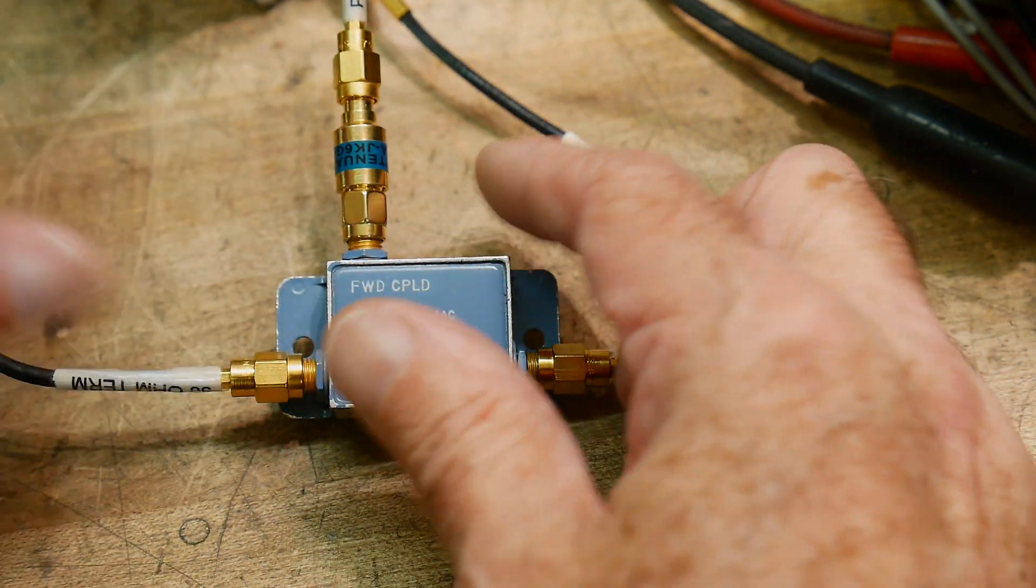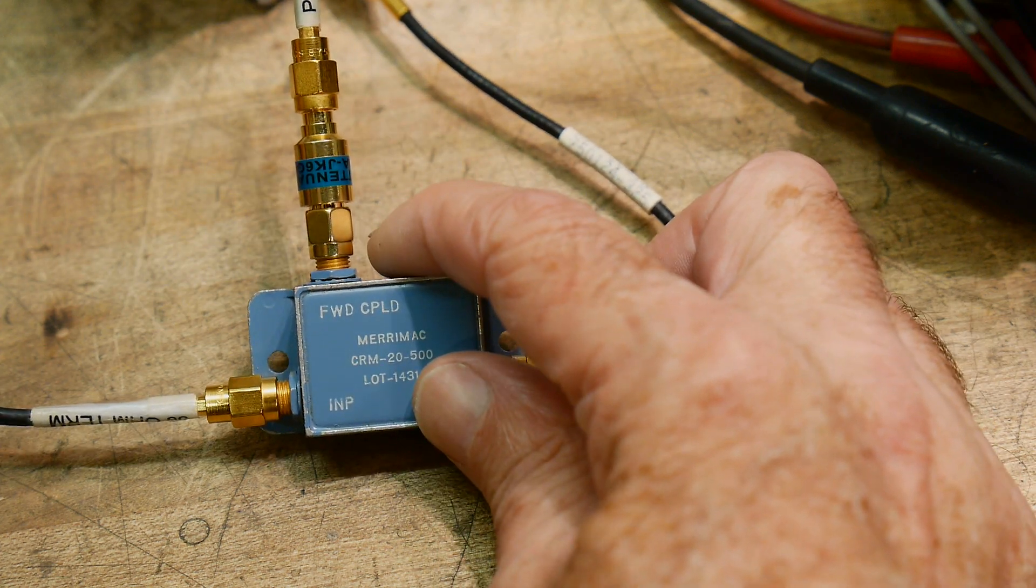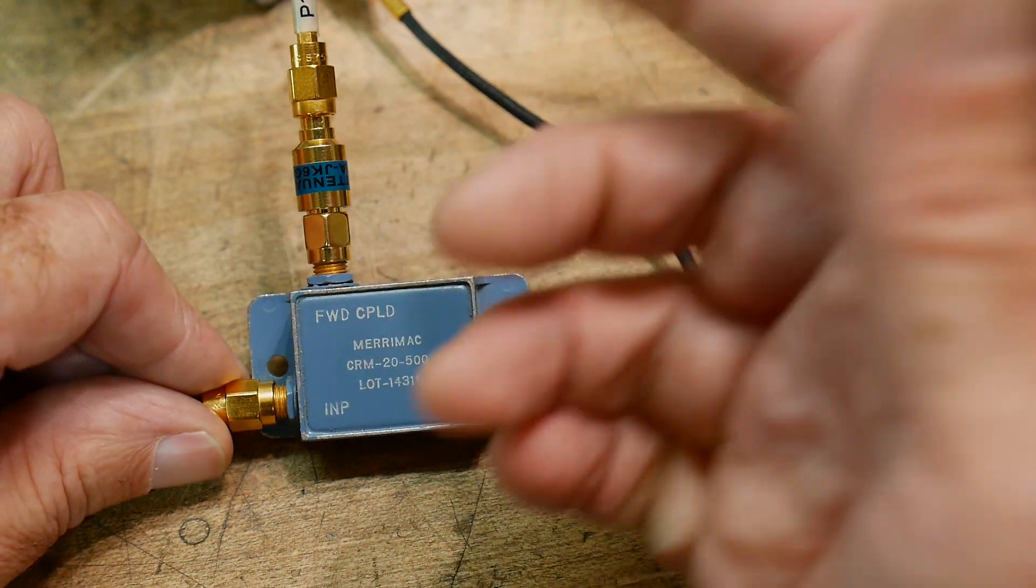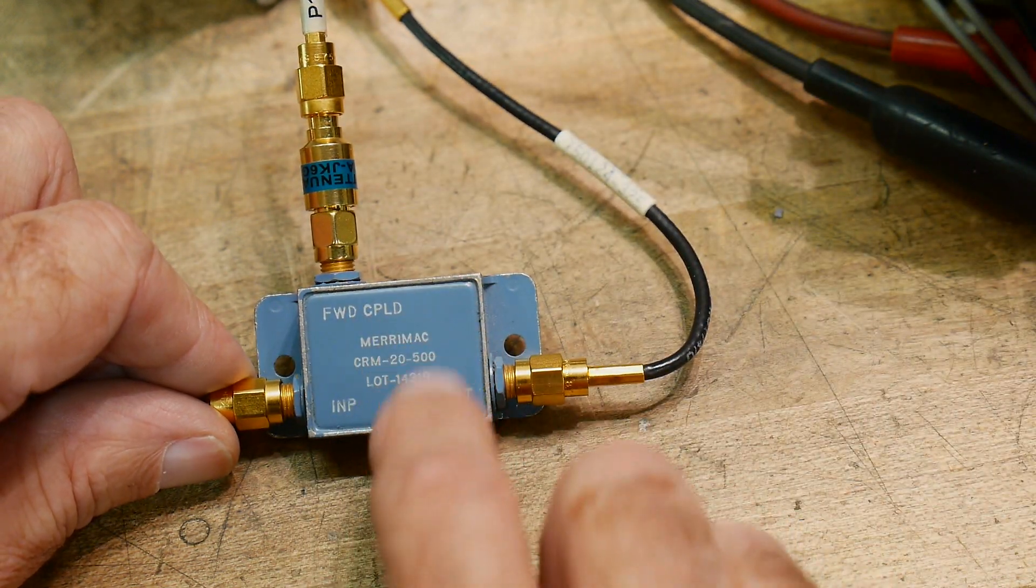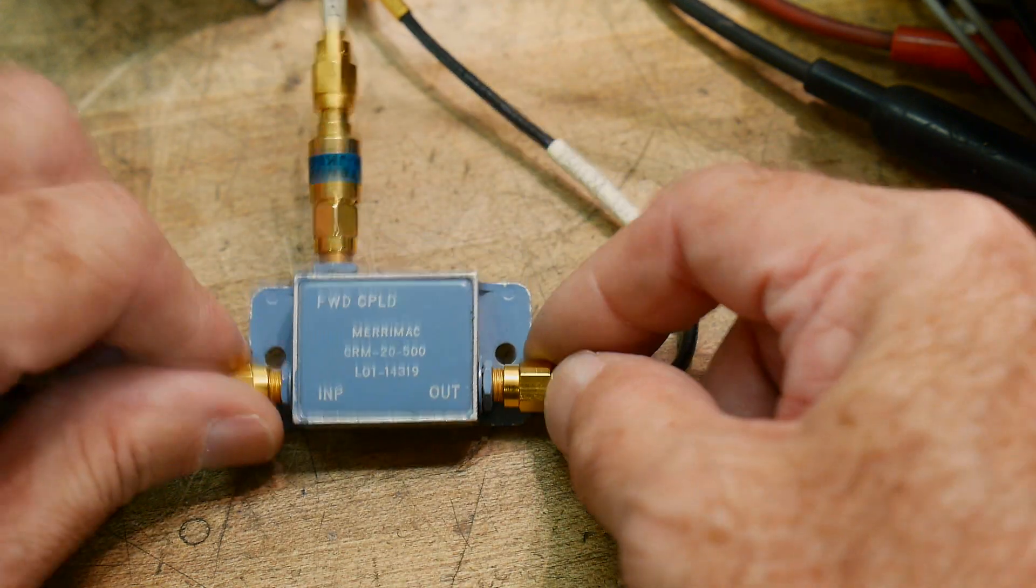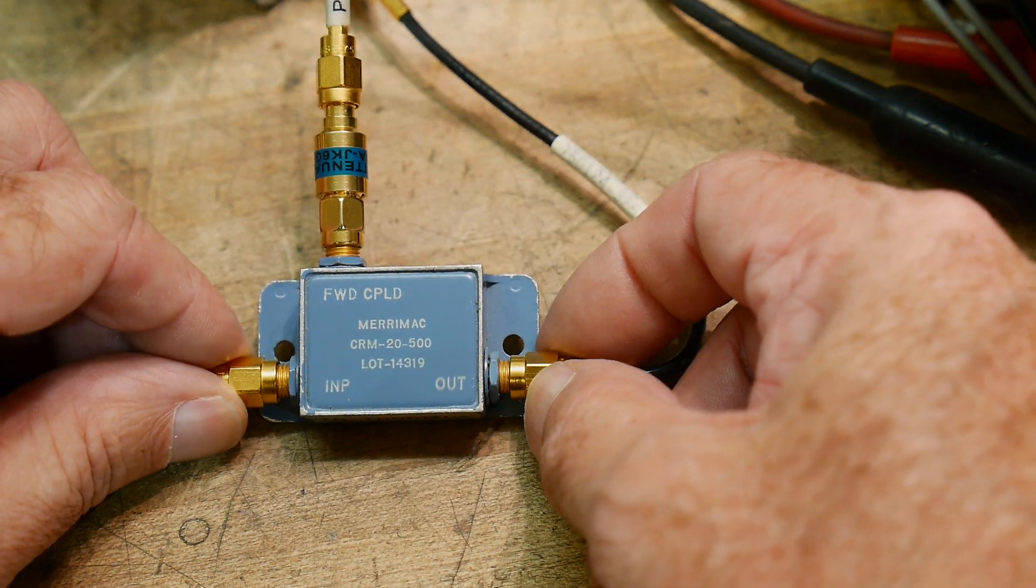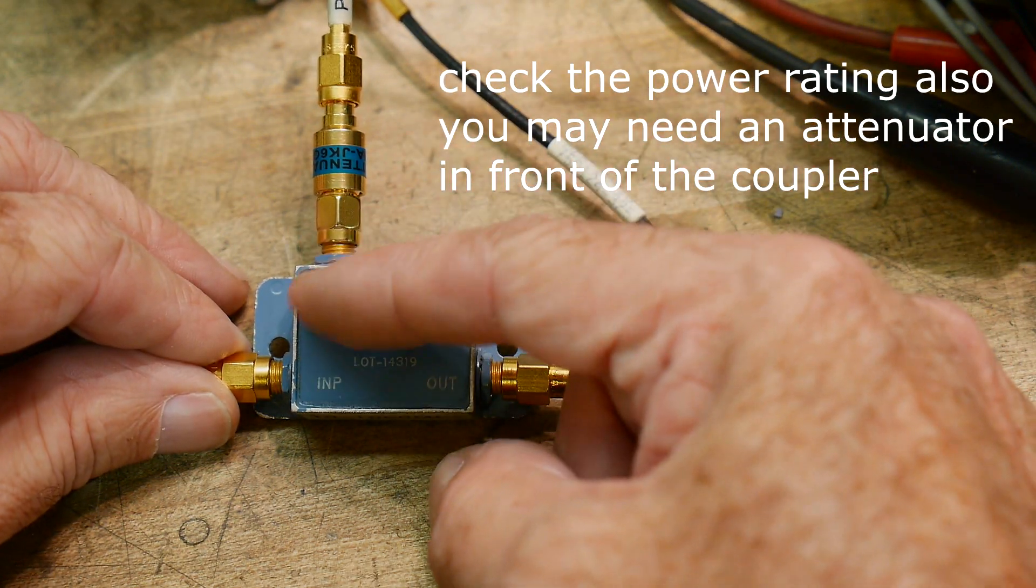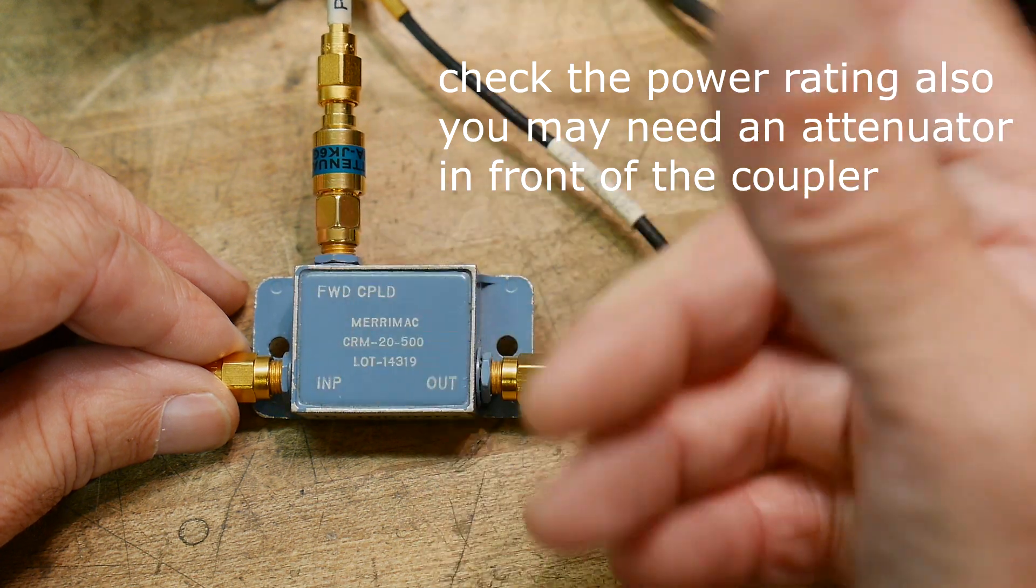So it's perfect for this simplex frequency of 1, we're transmitting at 146.52. So 150 MHz, this thing's going to be operating great. So the first thing is make sure that the frequency response of the coupler is good.